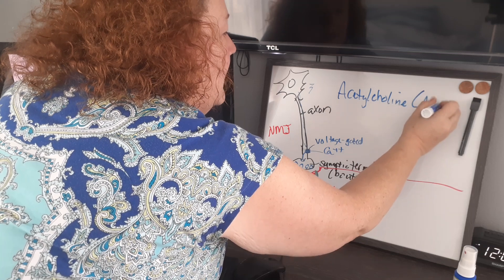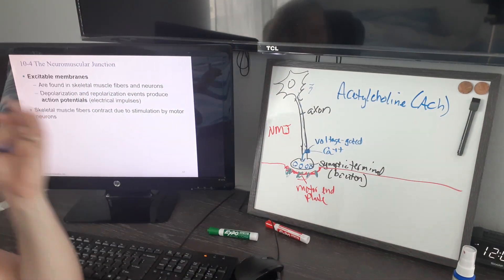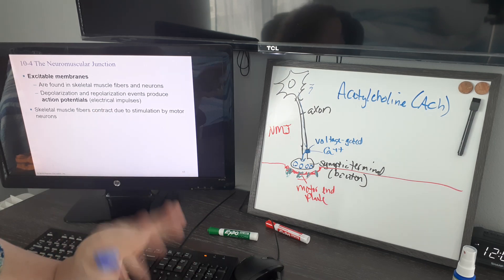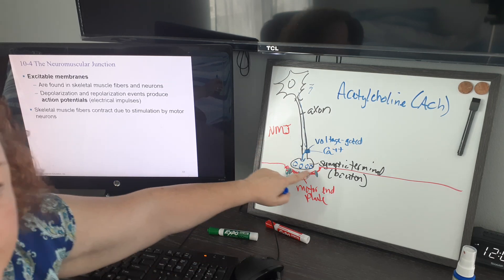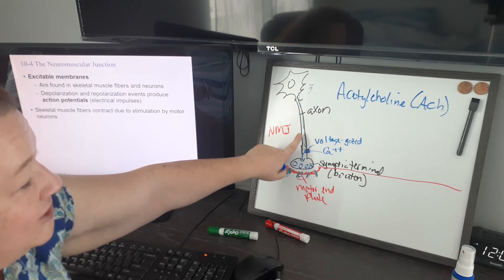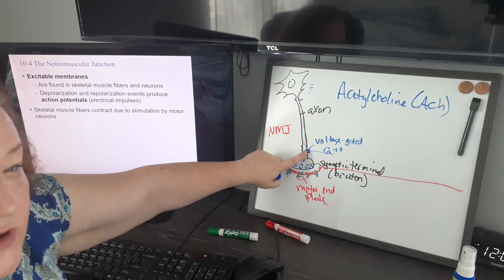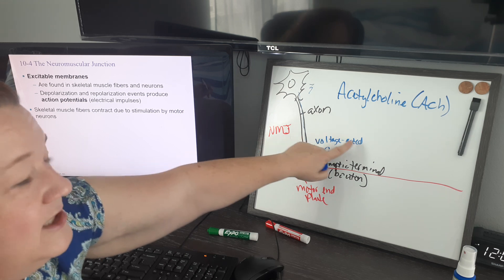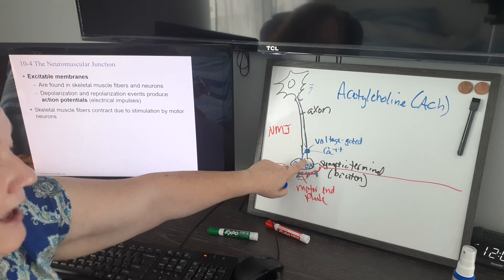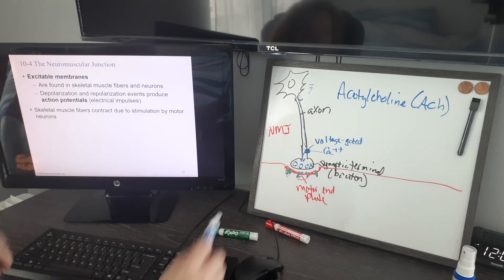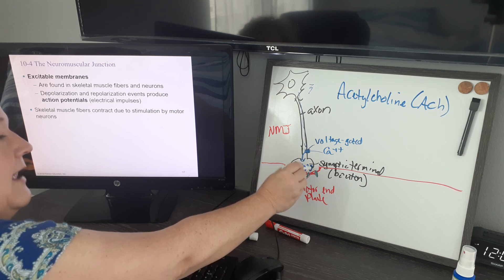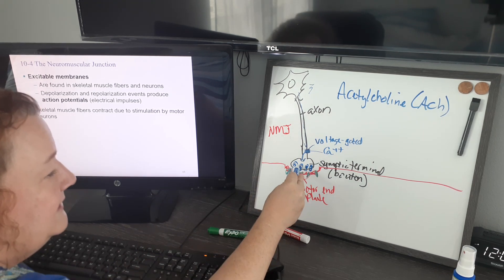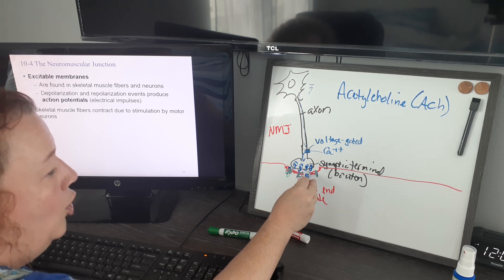The name of the chemical is acetylcholine, abbreviated ACh. Acetylcholine is a neurotransmitter — a chemical that the nervous system uses to cross over this gap, the synaptic cleft. When the action potential gets down to the bottom of the axon, it opens a voltage-gated channel for calcium to come in. The calcium tells the end of the neuron to release acetylcholine from those vesicles into the synaptic cleft.